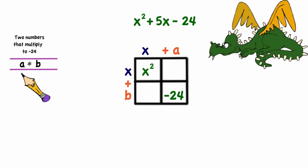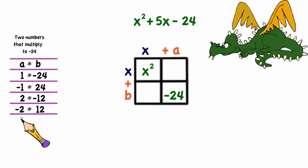So that would be 1 times negative 24 and negative 1 times 24, 2 times negative 12, negative 2 times 12, 3 times negative 8, negative 3 times 8, 4 times negative 6, and last negative 4 times 6.